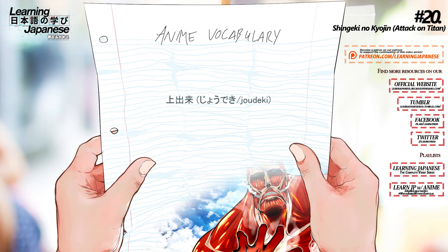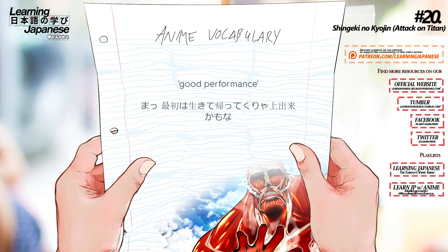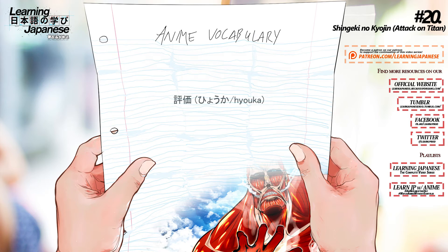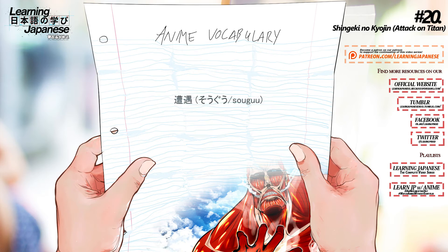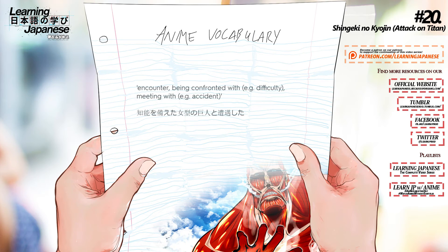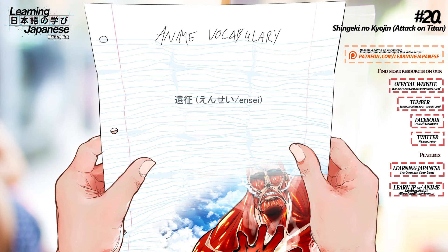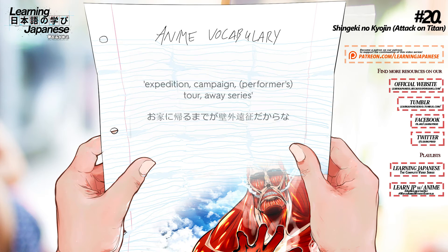上出来 (joudeki) — Good performance. 評価 (hyouka) — Valuation, estimation, assessment, evaluation, rating; to value, to assess, to rate, to appreciate, to acknowledge the value. 遭遇 (sougou) — Encounter, being confronted with, meeting with. 遠征 (ensei) — Expedition, campaign, tour.